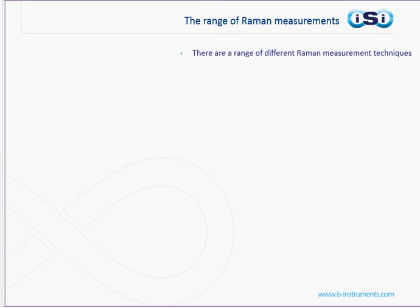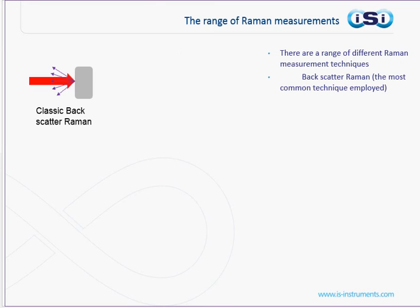So what is a Raman spectrometer? A Raman spectrometer is simply an instrument that measures this Raman effect to identify a chemical or molecule. There are a range of different measurement techniques used today. Arguably the most common is backscatter Raman, shown here, where laser light is fired at a sample and the photons are measured from the same side from which the laser light entered.